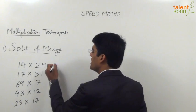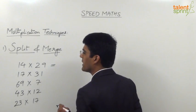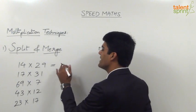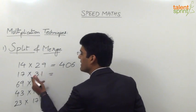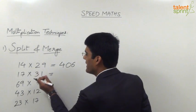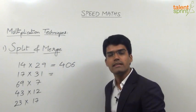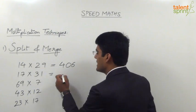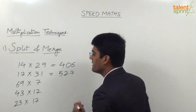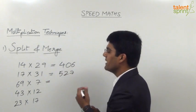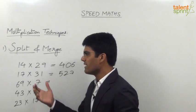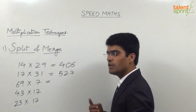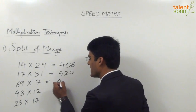The first one is 14 into 29. 29 is 30 minus 1, so 14 taken 30 times is 420, minus 14 gives 406. The next is 17 into 31: 31 is 30 plus 1, so 17 taken 30 times is 510, plus 17 is 527. The next is 69 into 7: take 7 seventy times to get 490, but we took one time extra, so 490 minus 7 equals 483.